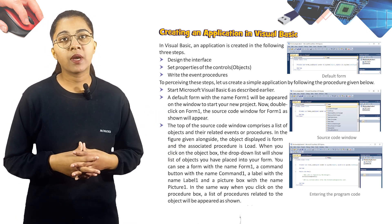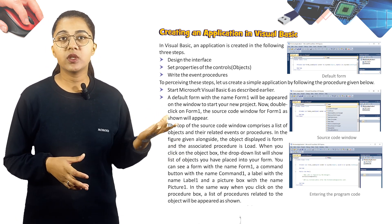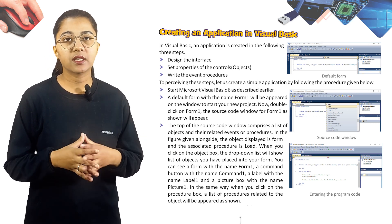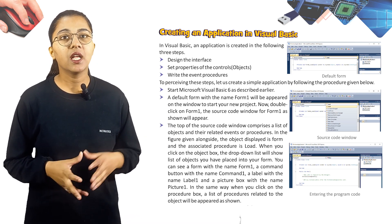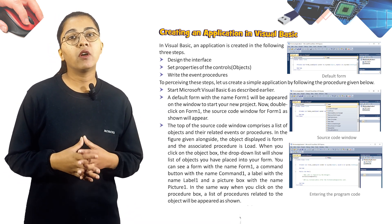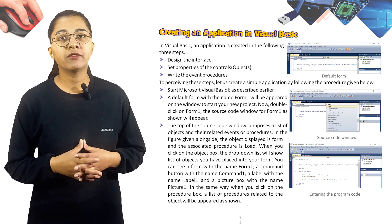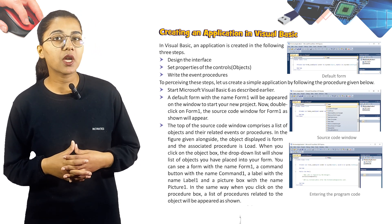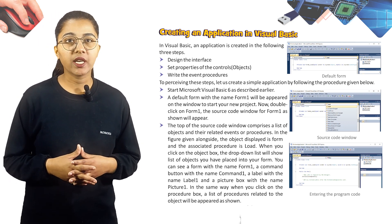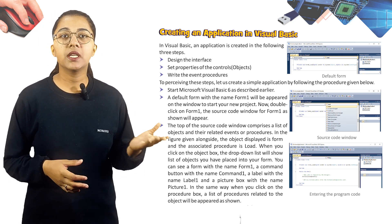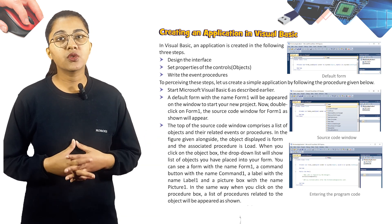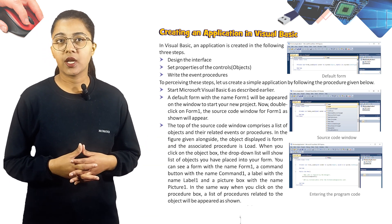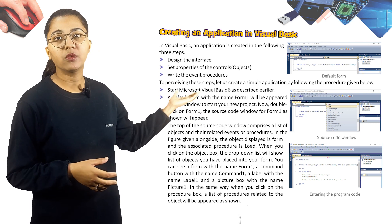First, start Microsoft Visual Basic 6 as described earlier. A default form with the name Form1 will appear on the window. To start your new project, double-click on Form1. The source code window for Form1 will appear.